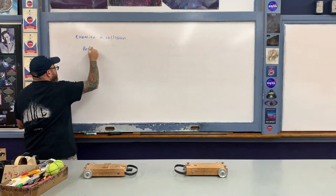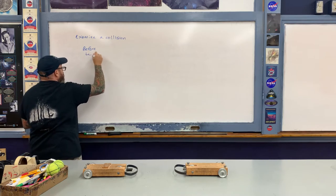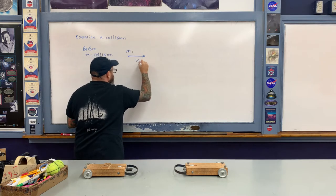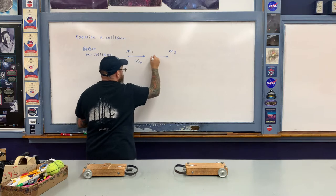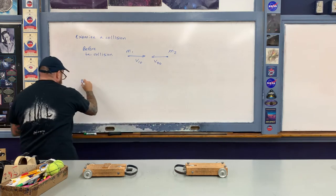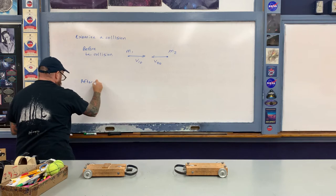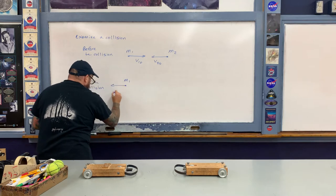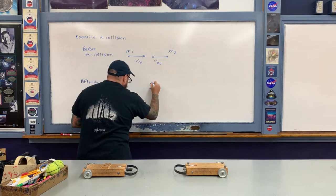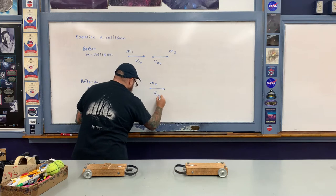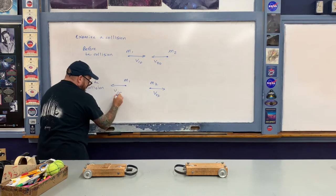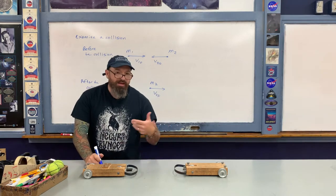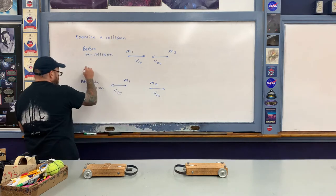Before the collision, we would have examined the situation as follows: here's cart number one with its initial velocity, here's cart number two with its initial velocity. After the collision, we have cart number one rebounding with a final velocity and cart number two rebounding with a final velocity. We did a specific example of a one-dimensional elastic collision involving pool balls. But what actually happens during the collision is now what we're going to examine.